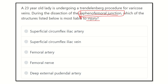First of all, we have to find out the saphenofemoral junction — that means it is the junction between the femoral vein and the saphenous vein. Then we have to find a structure which is closely related to this junction.